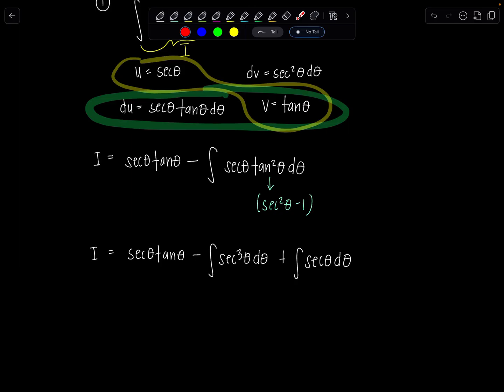But then hopefully you can see, aha, our boomerang has returned to us. This is i. But I have minus i. So treat it like some unknown quantity that we're solving for. I'm just going to move this term over with the other i on the left-hand side here. And now we have 2i is secant theta tan theta plus integral secant theta dθ. Very good. Now last step.